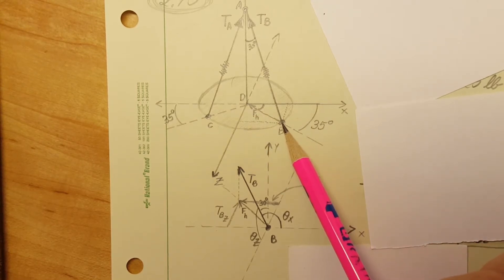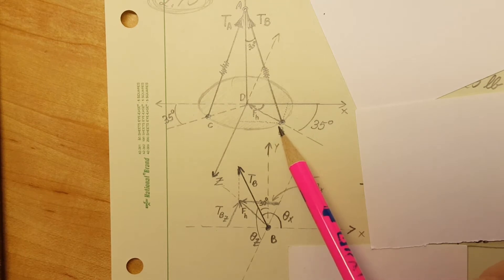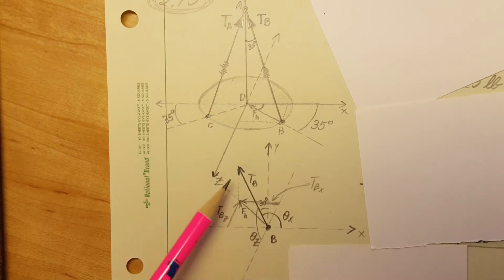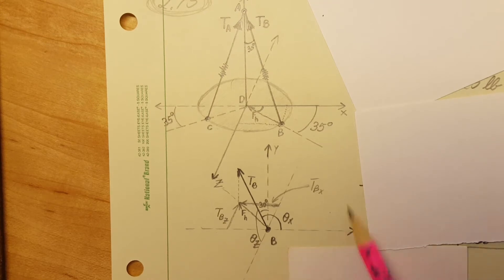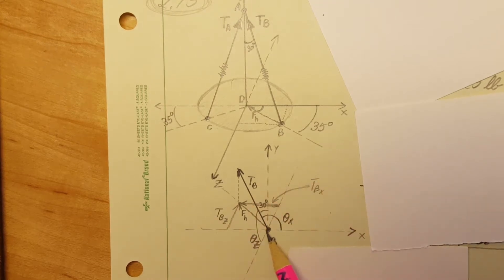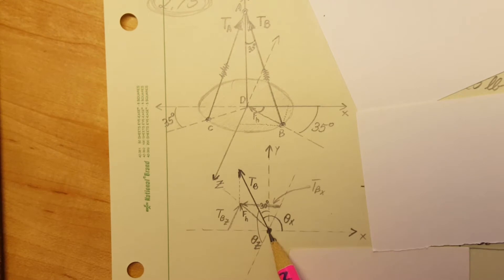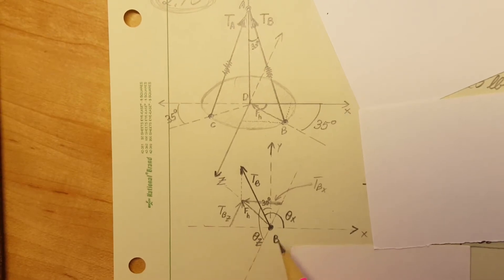What you should do at the first step is redraw the force B in a way where the coordinate system has its origin right here at the tail of this arrow, this vector at point B. So this is my x-axis, z and y, the origin right here.